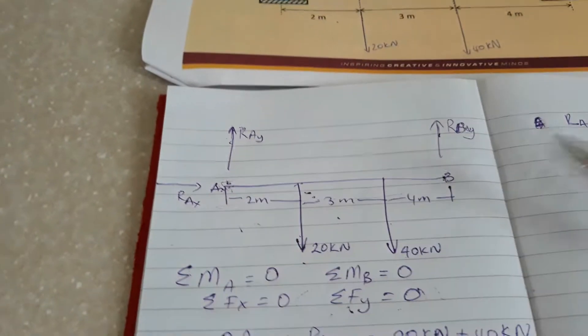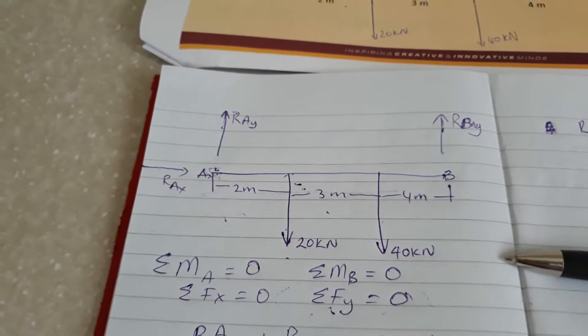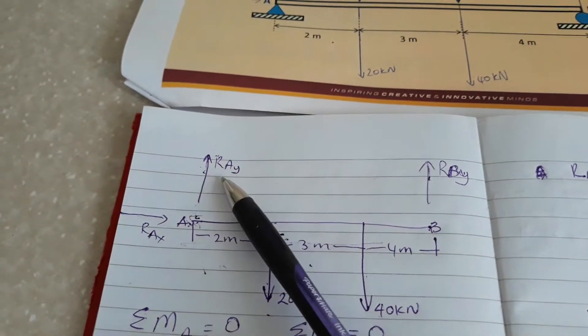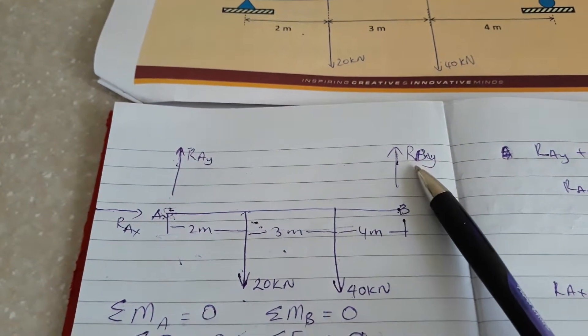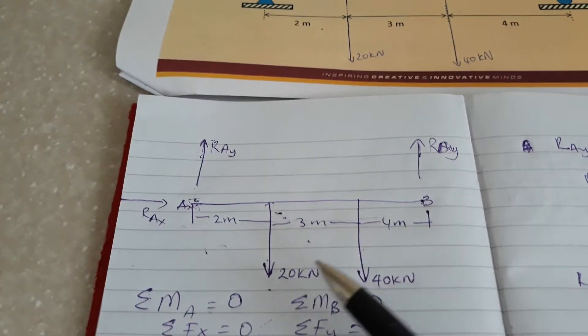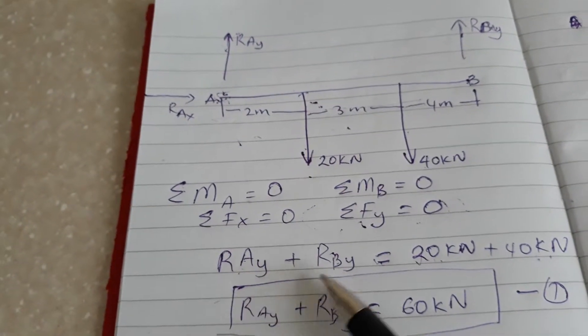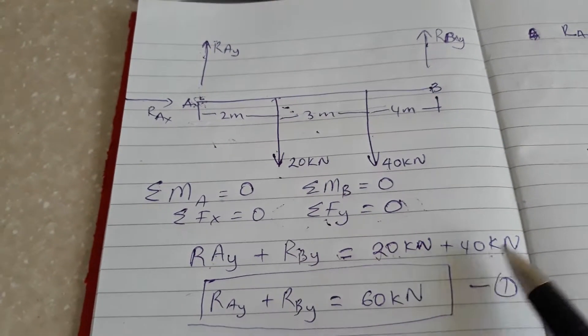You take the upward forces equals the downward forces. We have two upward forces which is RAy and RBy, which are the reactions, and two downward forces which is 20kN and 40kN.